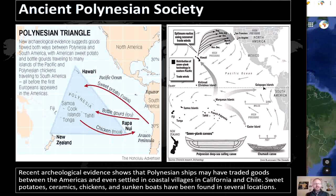Polynesia in particular has a fascinating history and is much more advanced than previously thought. The Polynesians may have reached the Americas hundreds of years before the Europeans. Recent archaeological evidence shows Polynesian ships may have traded goods with the Americas and even settled in coastal villages in California and Chile. Sweet potatoes, ceramics, chickens, and sunken boats have been found in several locations. The map here shows the exchange of sweet potatoes, bottled gourds, and chickens between Polynesians and South Americans. Languages were also shared between these cultures, as several similar words exist across Native American and Polynesian societies.